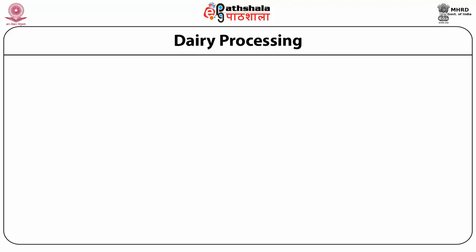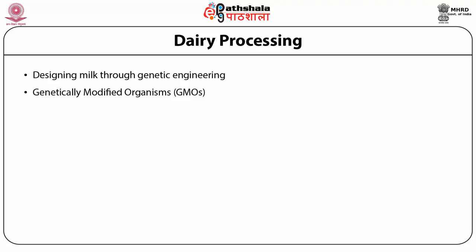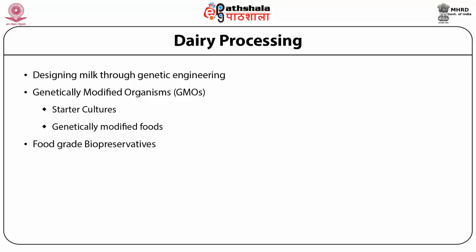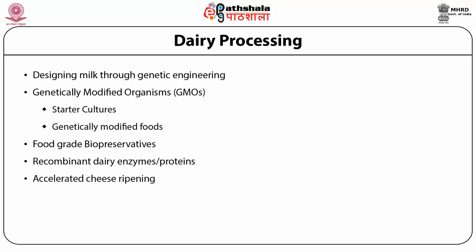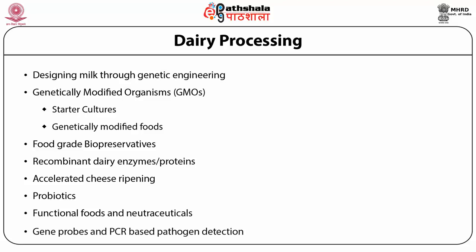Dairy processing includes designing milk through genetic engineering. Genetically modified organisms include starter cultures, genetically modified foods, food-grade biopreservatives, recombinant dairy enzymes or proteins, accelerated cheese ripening, probiotic functional foods and nutraceuticals, and gene-based PCR pathogen detection.